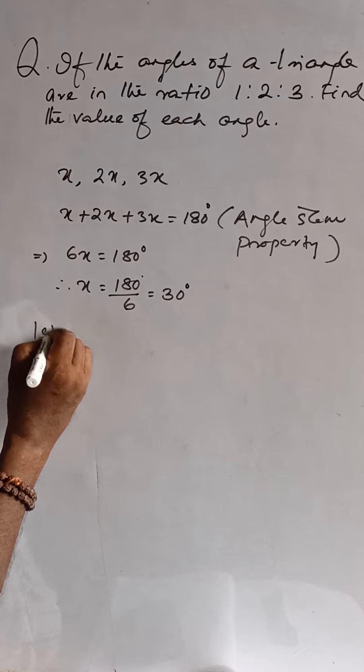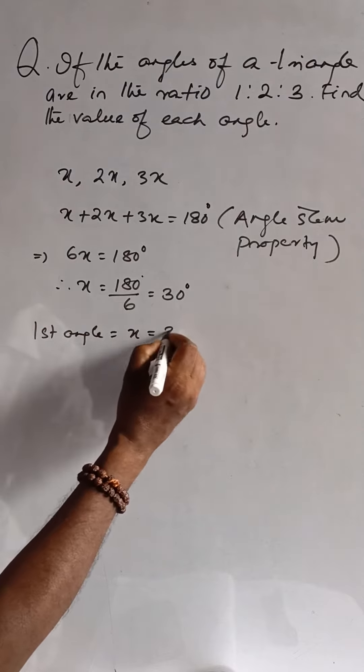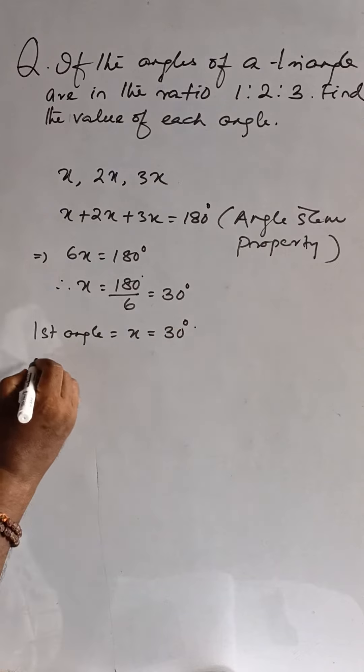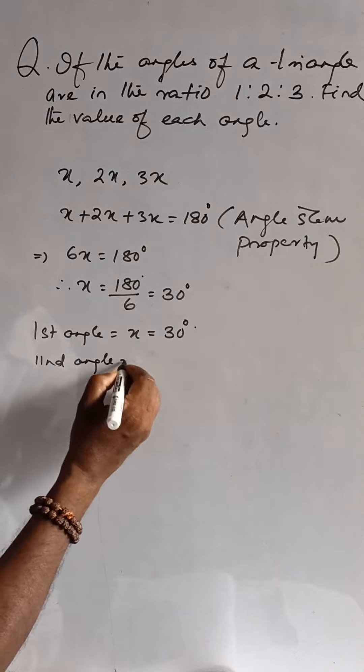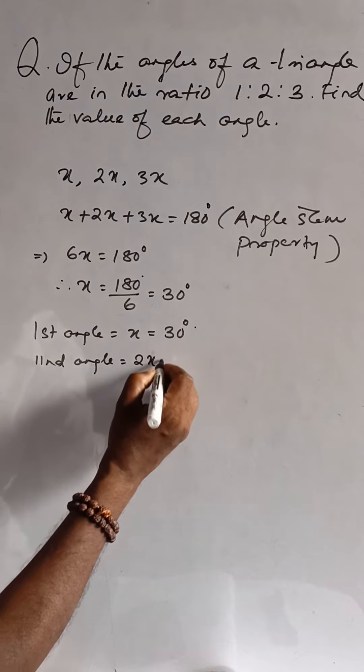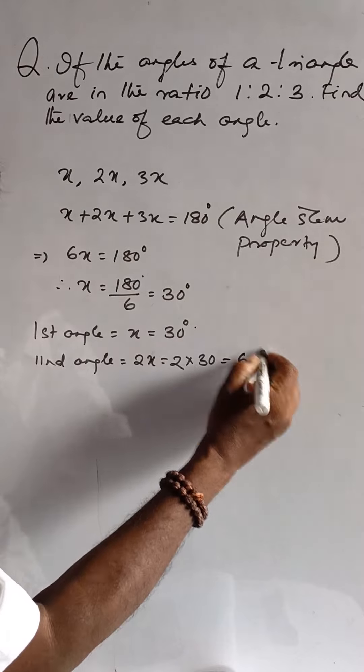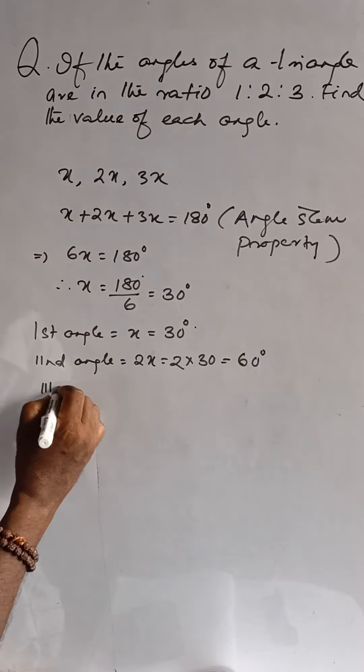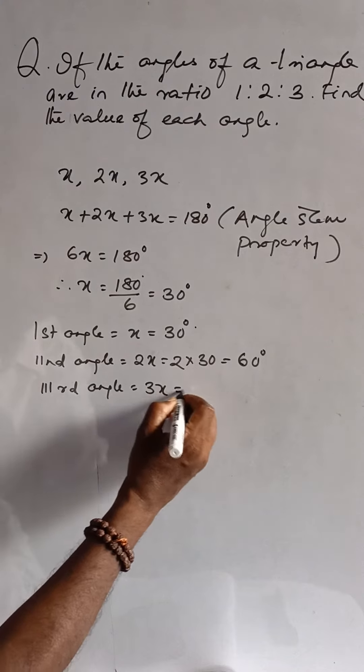Now the first angle is equal to x, which is equal to 30 degrees. Second angle is equal to 2x, 2 into 30, that is 60 degrees. And the third angle is equal to 3x, so 3 into 30, that is 90 degrees.